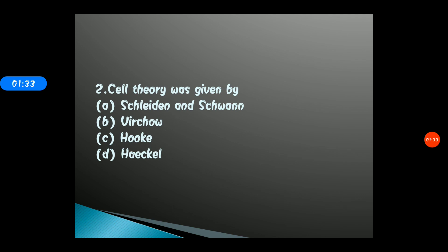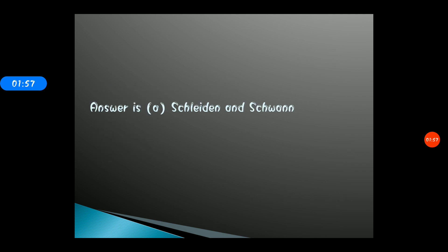Question 2: Cell theory was proposed by — options: A) Schleiden and Schwann, B) Virchow, C) Hooke, D) Haeckel. The correct answer is option A, Schleiden and Schwann. In 1838 and 1839 respectively, they proposed the cell theory: all living organisms are composed of cells, and the cell is the basic structural and functional unit of life. Later, Rudolf Virchow added 'Omnis cellula e cellula.'